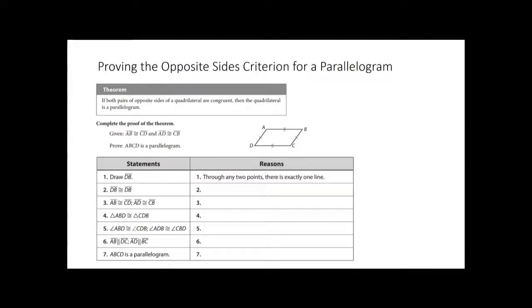We're going to look at this proof now. To start, we have to draw diagonal DB. We draw it because we're going to use triangle congruency to prove the two triangles are congruent, and therefore use CPCTC. Step one: draw DB — any two points define one line, so we can draw a line between points D and B. Step two: DB is congruent to itself by the reflexive property.